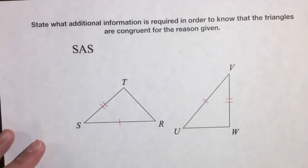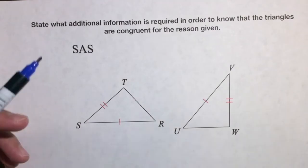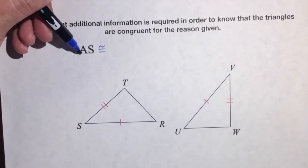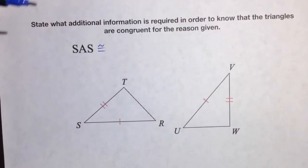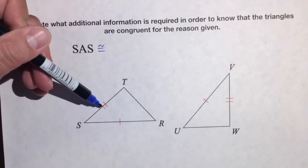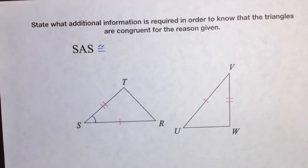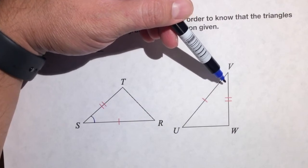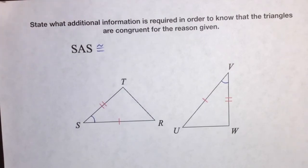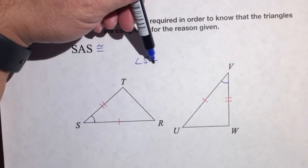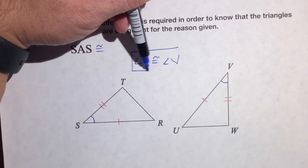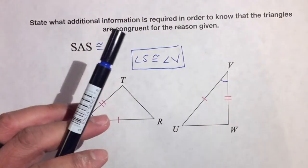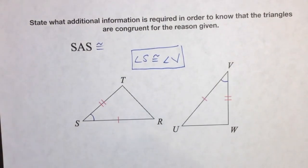For the last one, state what additional information is required to prove the triangles congruent by side-angle-side congruency. We need an angle sandwiched between the two sides with tick marks. Here's one tick mark and here's two tick marks — think of the two sides as the bread and the angle as the peanut butter. The sandwich angle would be angle S on one triangle and angle V on the other. So we need angle S congruent to angle V.